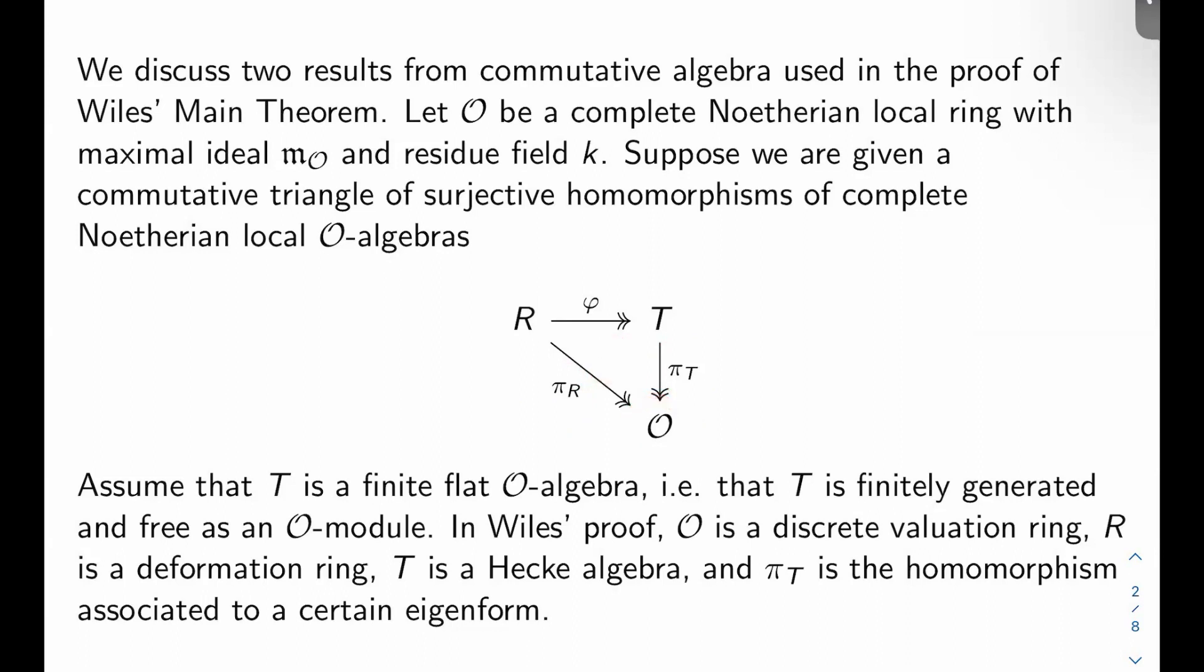We're also going to assume that T is a finite flat O-algebra, meaning in this case that it's finitely generated and free as an O-module. Just so you know, like in Wiles' proof, O here is just a discrete valuation ring. In fact, usually it's like some finite extension of the p-adic integers or something.